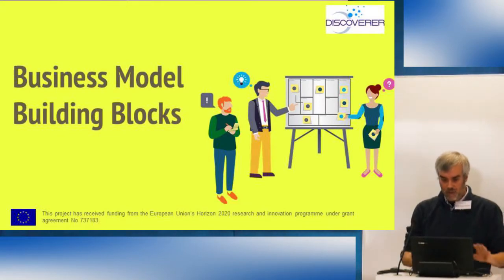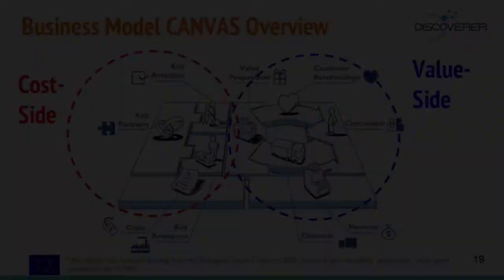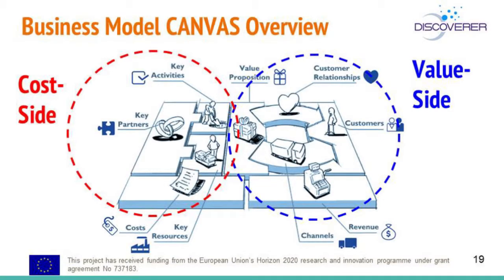The nine building blocks have two parts: the value side and the cost side. The value side — more visible — includes customer relationships, channels, and especially the value proposition, which drives revenue. The less visible side includes key partners, key activities, and key resources, plus the cost structure needed to support the value proposition.